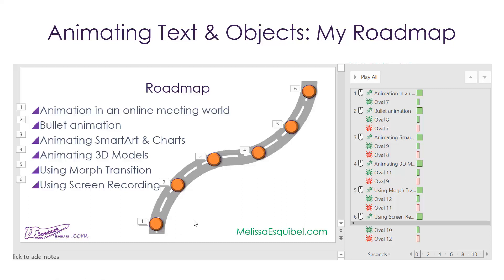So we looked at some different types of bullet animation: basic bullet animation, which brings one topic in at a time; an isolated bullet technique where one pulls focus by either changing color or having the previous bullet leave the slide; and a combined approach where we mixed text bullets with objects. The magic happens in the animation pane.